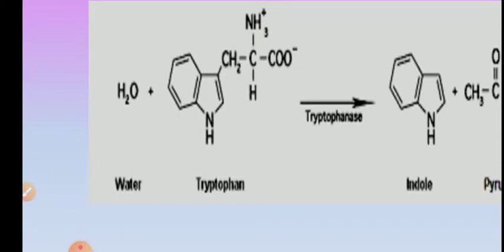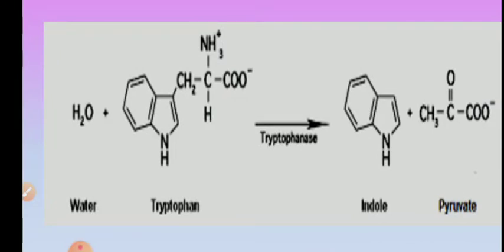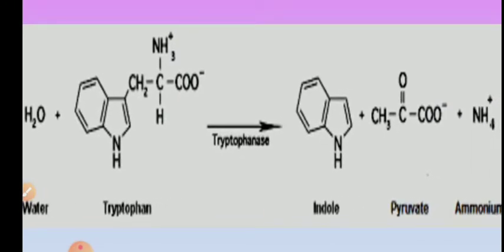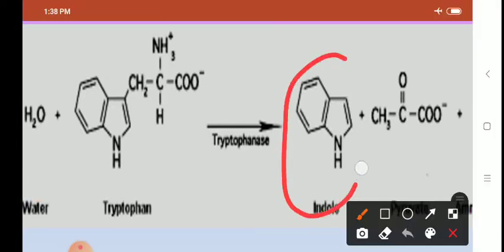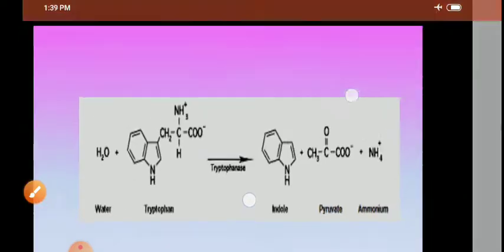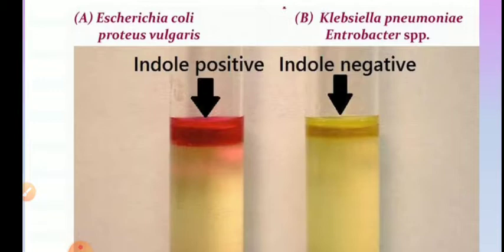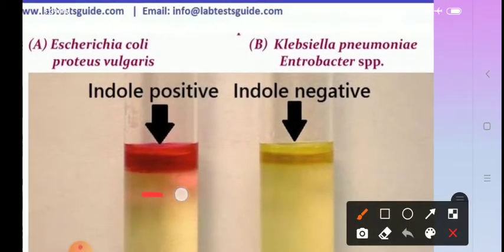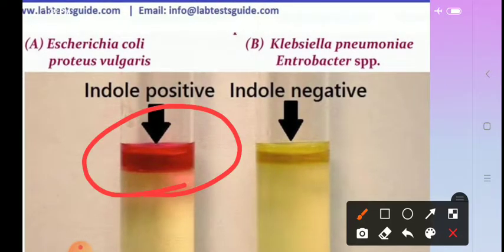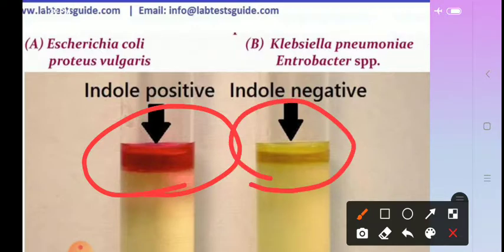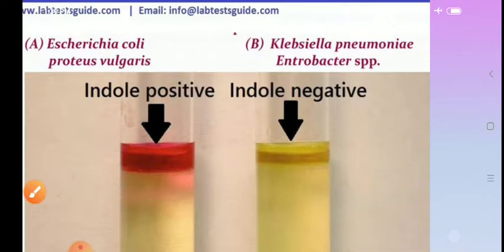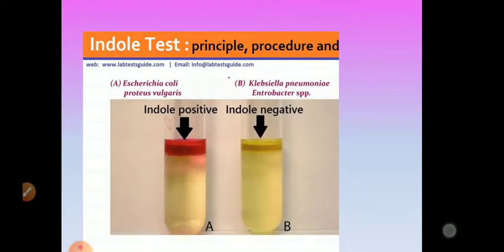Look for the appearance of a cherry red colored ring after inoculation, incubation, and addition of Kovacs reagent. The tryptophanase enzyme breaks down the amino acid tryptophan and releases indole, which is then detected by adding Kovacs reagent. In the first tube, you can see a cherry red colored ring — this is indole positive, e.g. E. coli or Proteus vulgaris. In the second tube, there is no cherry red ring — indole test negative, like non-fecal coliform Enterobacter aerogenes. So fecal coliforms give indole positive; non-fecal coliforms give indole negative.